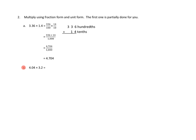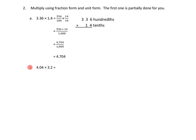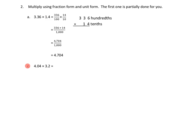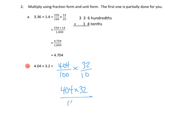Let's see if we can do the same thing with 2c. I'm going to zoom in again. 4.04 — if we express that in hundredths, that's 404 hundredths. Times 3.2 — that's 32 tenths. So that would be the same as 404 times 32, all over 100 times 10, or 1,000. I'm going to do the unit form version over here on the side: 404 hundredths times 32 tenths.